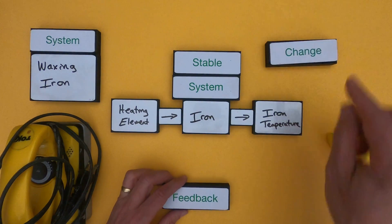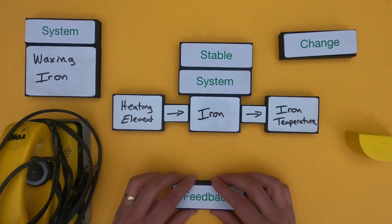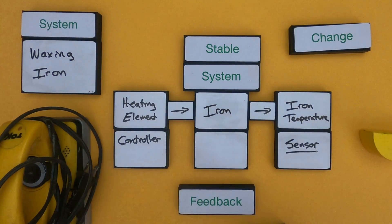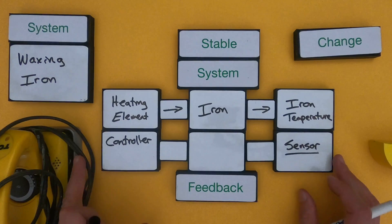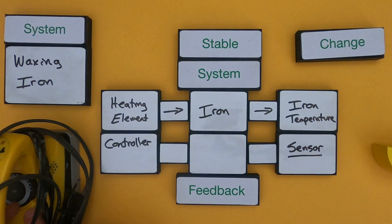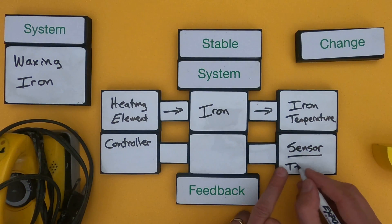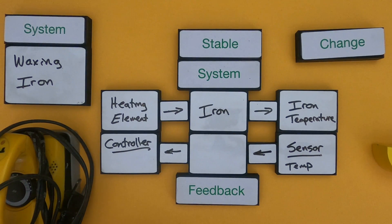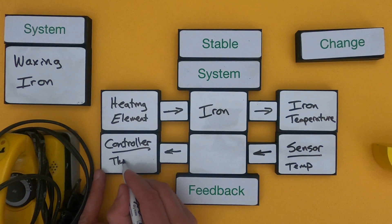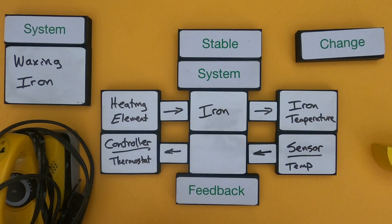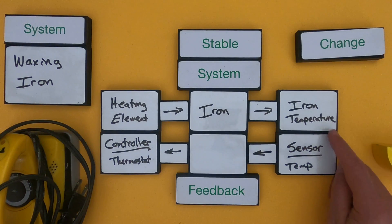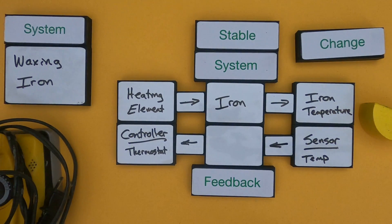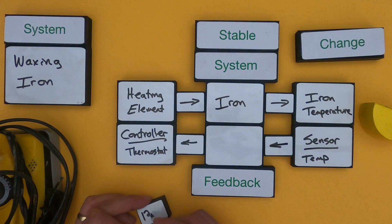This is a changing system, but it doesn't get to a stable system until we build some kind of a feedback loop. There has to be something feeding back from the output so the iron has a sense of what the temperature is and can modify that. So what we have now is a feedback loop. There's a sensor built into the iron, and it's going to sense the temperature. It then sends that signal to a controller — which we can think of as a thermostat — that controls the heating element. For a feedback loop, we have to have a set point. Let's say the set point is 120 degrees Celsius.